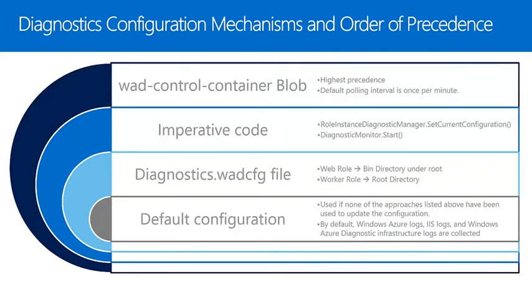Windows Azure Diagnostics can be configured using several different mechanisms, listed here in precedence order for how the diagnostic monitor applies configuration information. The preferred mechanism is to configure diagnostics using an XML configuration file called the diagnostics.wadcfg. Using this approach, the diagnostics file completely defines the configuration and it can be updated and redeployed at will. Using the config file approach has other advantages over the programmatic approach — for example, diagnostics starts before the onStart method is run, so errors in startup tasks can be caught and logged.